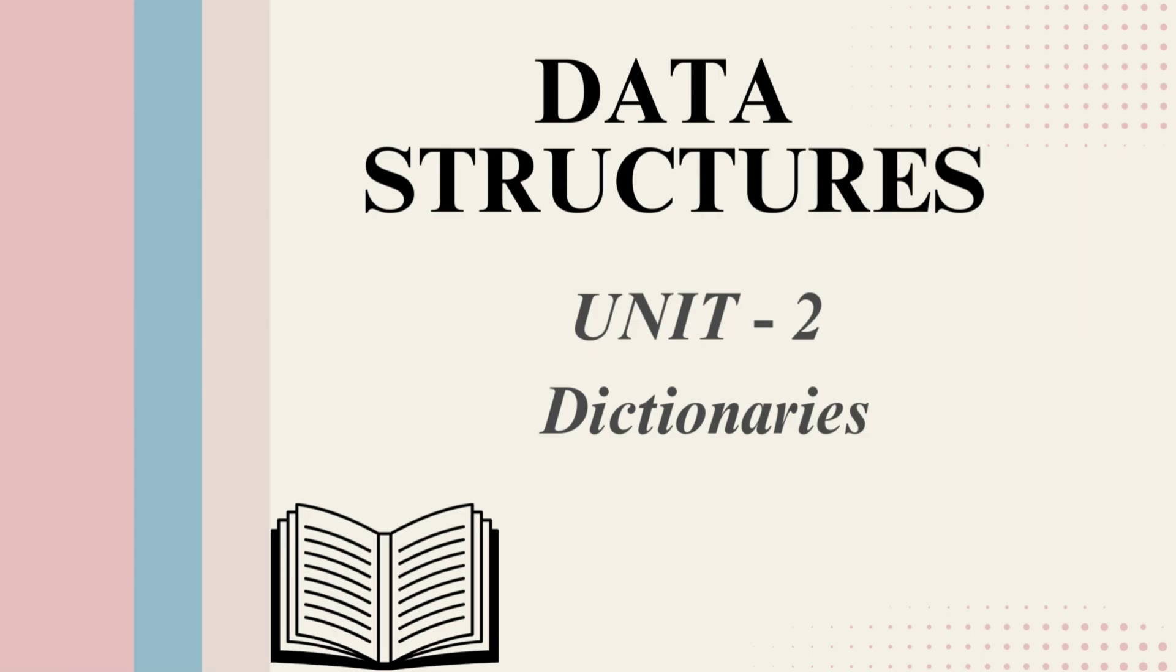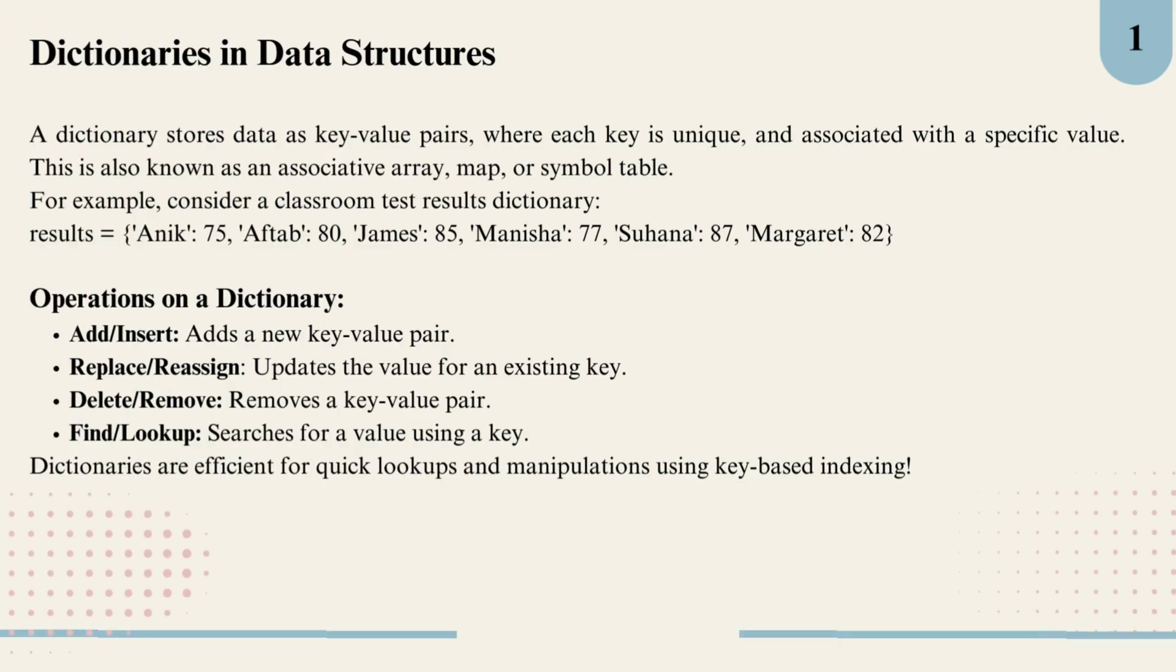So what exactly is a dictionary in data structure? Simply put, it's a way to store data as key-value pairs. Each key is unique and connects to a specific value, kind of like a student name associated with their test score. Imagine we have something like this: results equals student name and marks. Here each student name is a unique key linked to a specific score.